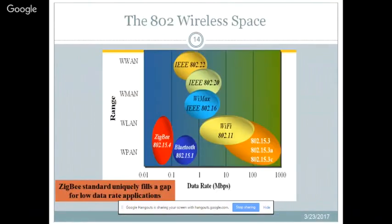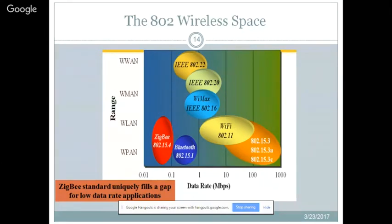Looking at the 802 wireless space, Wi-Fi achieves 10–100 Mbps, Bluetooth 0.1–1 Mbps, and there was a gap for 0.01–0.1 Mbps data rates. ZigBee fills this gap, designed for environments where lean sensor data is transmitted only when an event occurs or at periodic intervals — for example, taking temperature readings at specific instances.